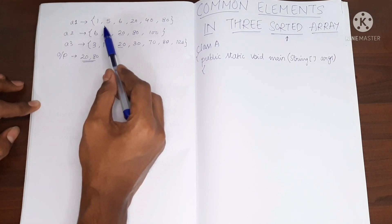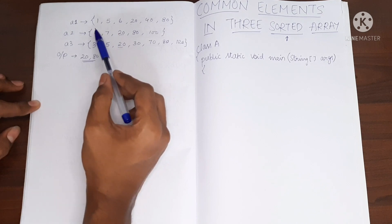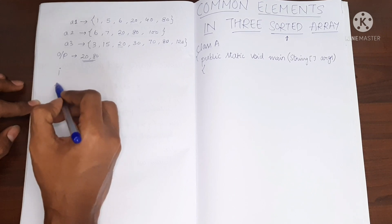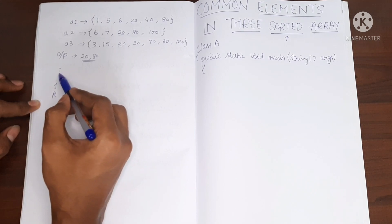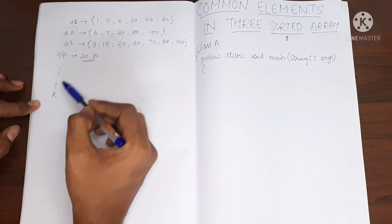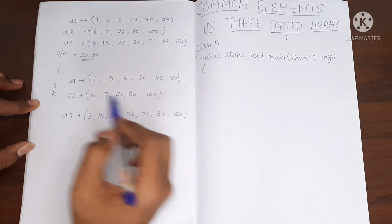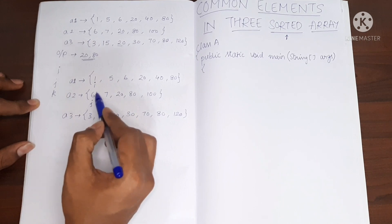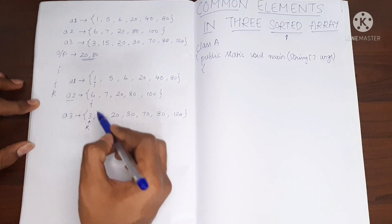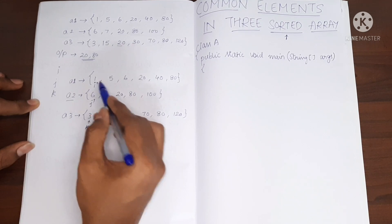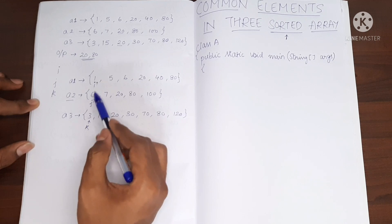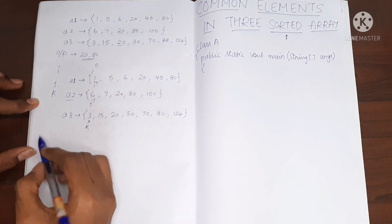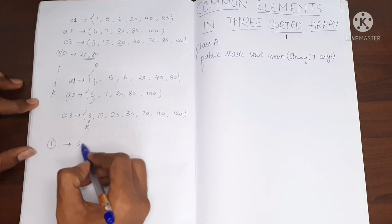Since it is a sorted array, we are going to use that fact and come up with an efficient solution. For this I am going to use three integers: i, j, and k. i will be for array 1, j will be for the second array, and k will be for the third array. i, j, and k will initially point to index number zero of their respective arrays.